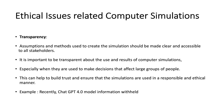The next issue is transparency. To ensure transparency in computer simulations, the assumptions and methods used to create the simulation should be made clear and accessible to all stakeholders, especially users. It is important to be transparent about the use and results of computer simulations, especially when they are used to make decisions affecting large groups of people. One current example related to this is ChatGPT-4, where the owner decided not to release more information about how it works — these are things that hold transparency back and may cause mistrust.